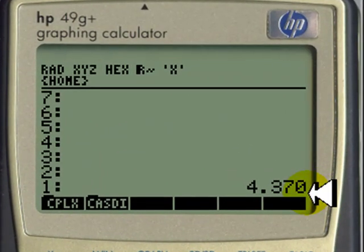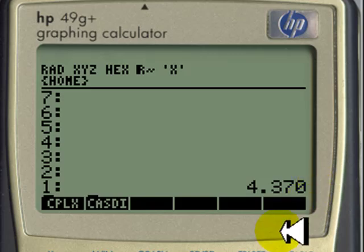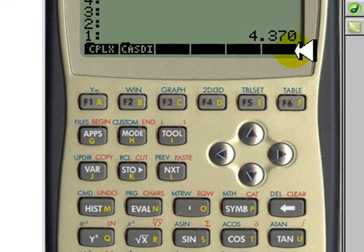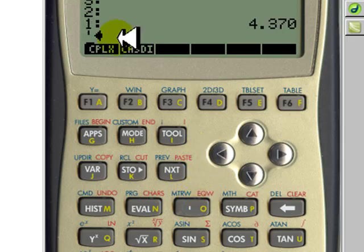Let's assume that this 4370 at the bottom of the stack is an important value that I want to store away for future use. To do that, all we need is to write a name of a new variable. Apostrophe actually types two apostrophes and leaves the cursor between the apostrophes ready for you to type the name of the variable.